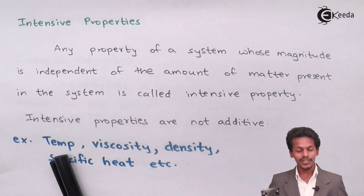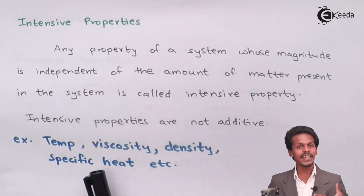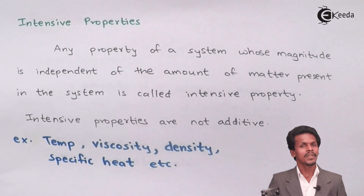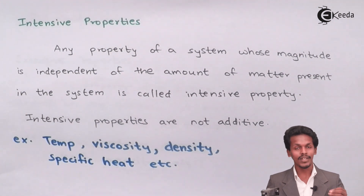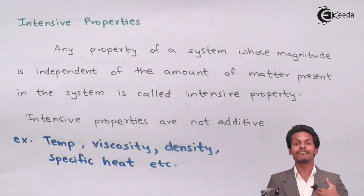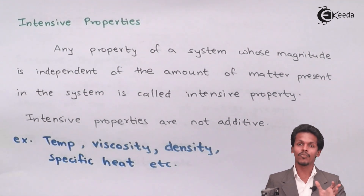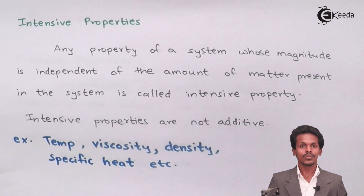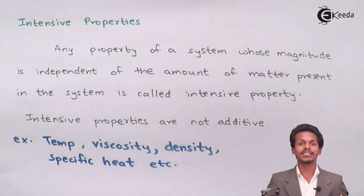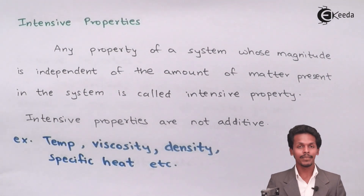Examples of intensive properties include temperature, viscosity, density, and specific heat. Consider temperature: the boiling point of water is 100 degrees Celsius. Whether we take 100 ml of water or only 50 ml of water, the boiling point remains 100 degrees Celsius. So even if you change the mass or quantity of the substance, the temperature doesn't change — it doesn't depend on the amount of matter.